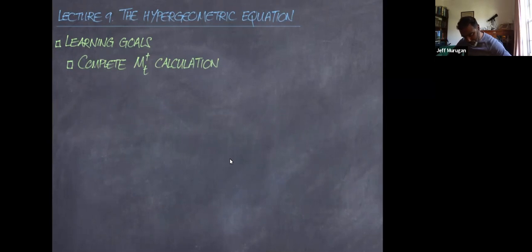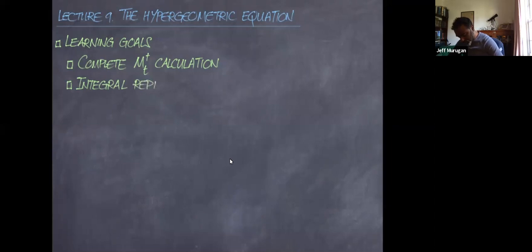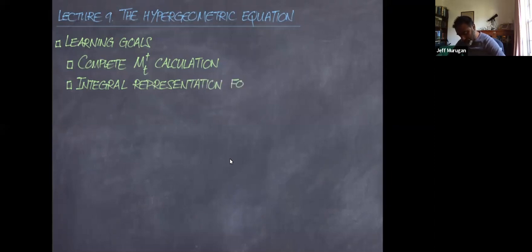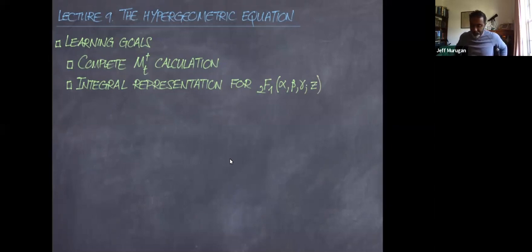Secondly, we would like to get an integral representation for the hypergeometric function, which we've seen before and which I denoted previously by 2F1, which comes with some parameters alpha, beta, gamma, and a function of some generally complex variable z.